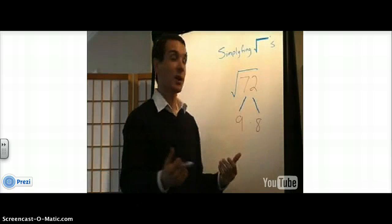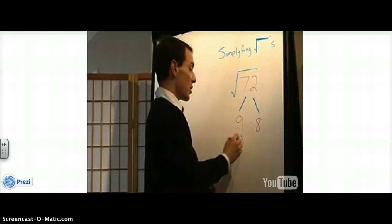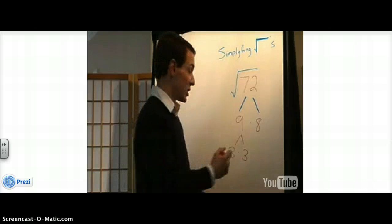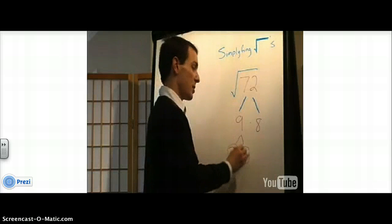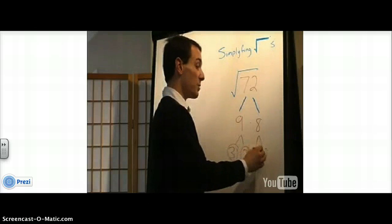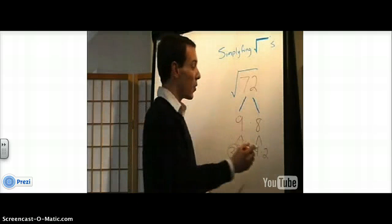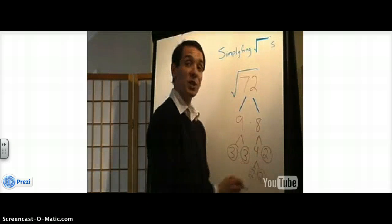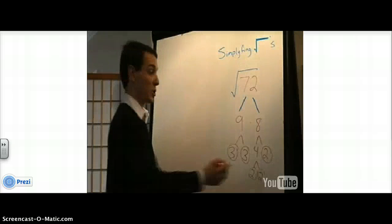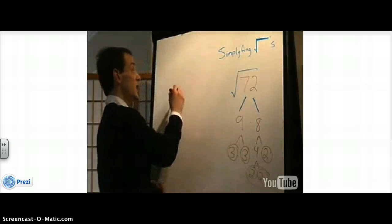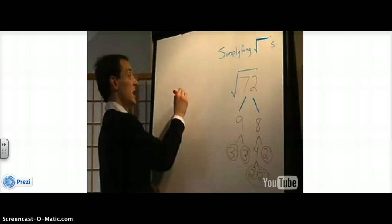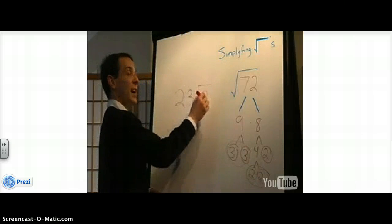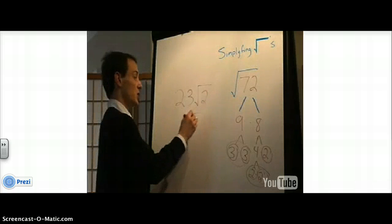If you can break the number down, you want to keep going. 9 is 3 times 3 — both of those are prime numbers, so I'm going to circle them because we can't break them down. 8 we can make 4 times 2. 2 is prime; 4 is not, so we keep going: that's 2 times 2. Now we look for pairs of numbers. Here's a pair of 2's, so I'm going to take a 2 out. Here's a pair of 3's, so I'm going to take a 3 out. This 2 doesn't have a buddy, so he's got to stay inside. 2 times 3 is 6, root 2.